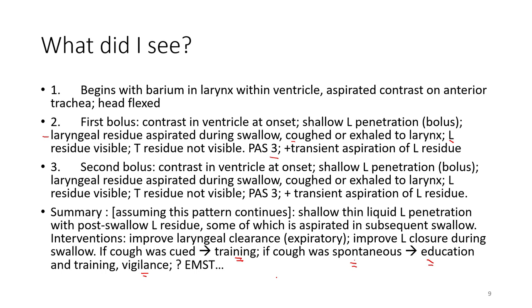So you notice in the summary here, there are no numbers, no PA scale numbers. It's a narrative summary of the results of those two events. So this is an example of how to reduce that information into a narrative.